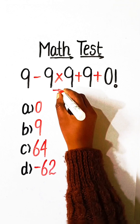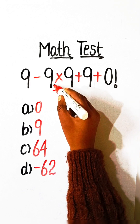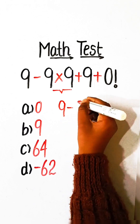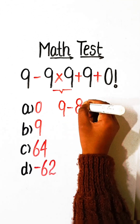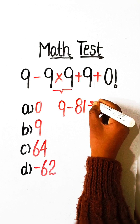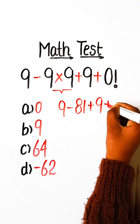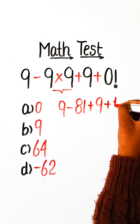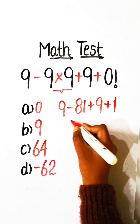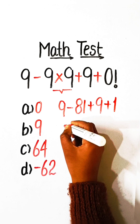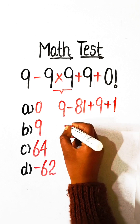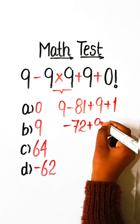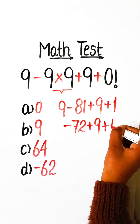So let's solve this. We have to firstly solve the multiplication part: 9 multiply by 9 — so 9 minus 81. Plus 9, plus the value of 0 factorial which is 1. So 9 minus 81 plus 9 plus 1.